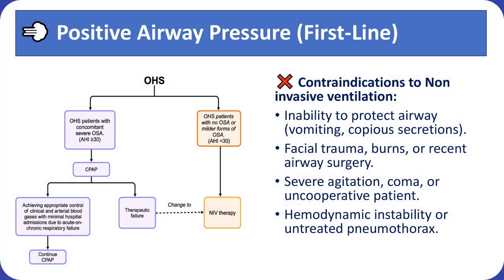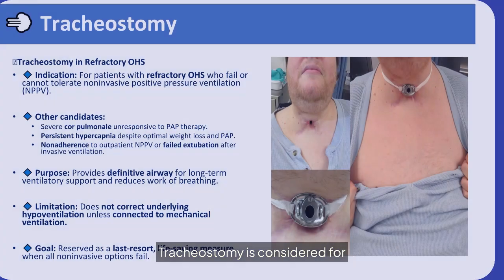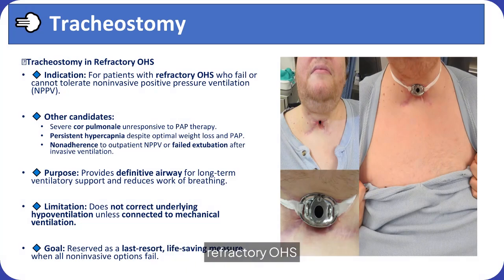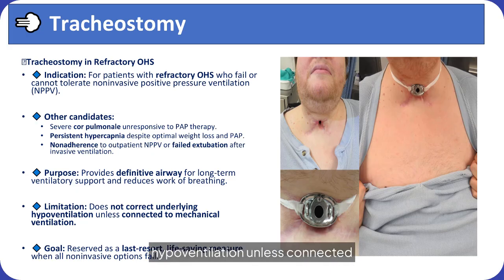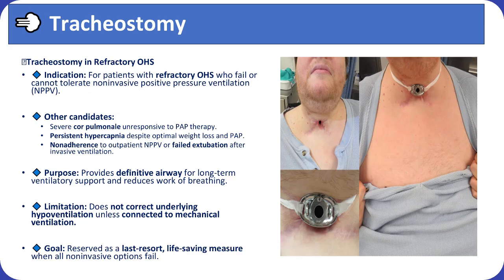Contraindications to PAP include inability to protect the airway, facial trauma, pneumothorax, and hemodynamic instability. Tracheostomy is considered in patients with refractory OHS who fail or cannot tolerate non-invasive positive pressure ventilation, severe cor pulmonale unresponsive to PAP therapy, persistent hypercapnia despite optimal weight loss and ventilation, non-adherence to outpatient therapy, or failed extubation following invasive ventilation. It is reserved as a last-resort, life-saving intervention when all non-invasive options have been exhausted.